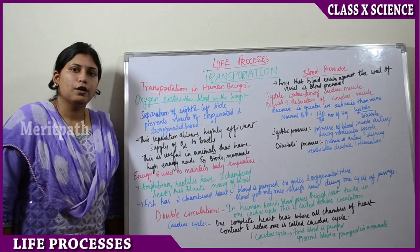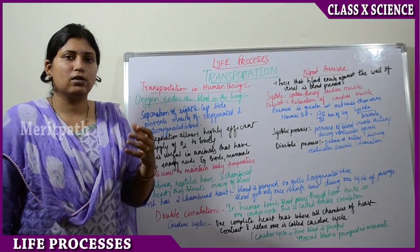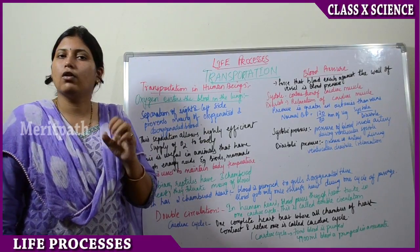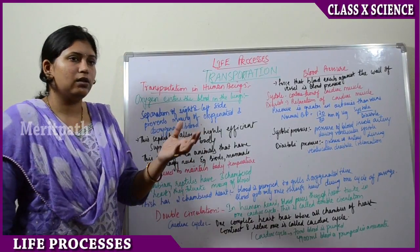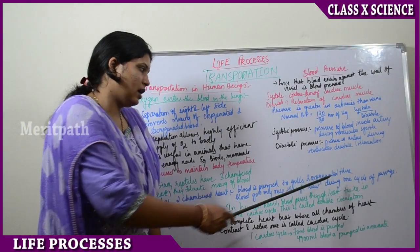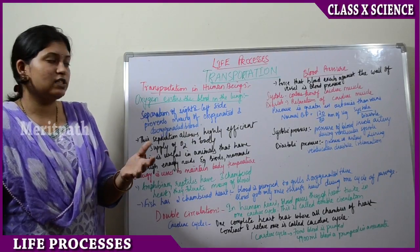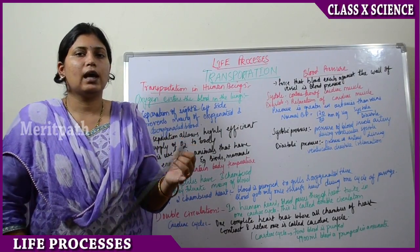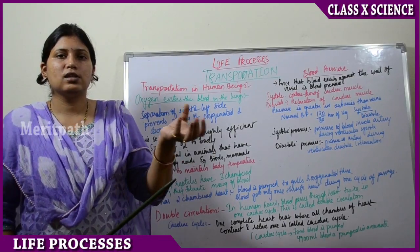Fish has only a two-chambered heart. Whenever a fish takes water into its mouth, oxygen-rich water enters and goes out via the gills. In this process, the blood absorbs the dissolved oxygen from the water. Blood is pumped to the gills and oxygenated there. In one cycle of taking water in through the mouth and sending it out via the gills, the oxygen is absorbed by the blood.